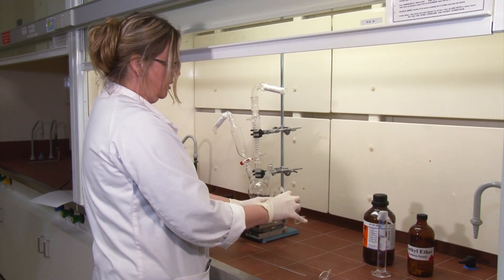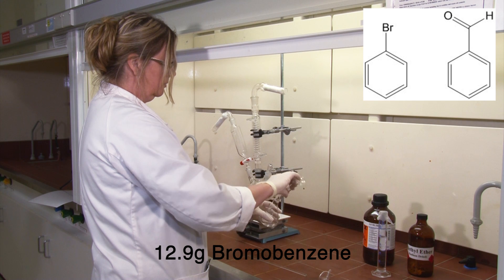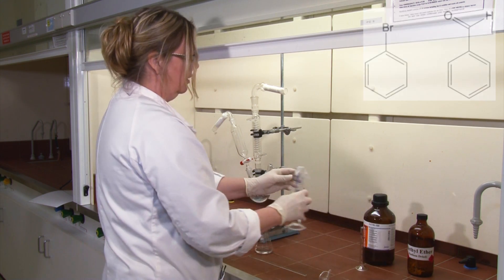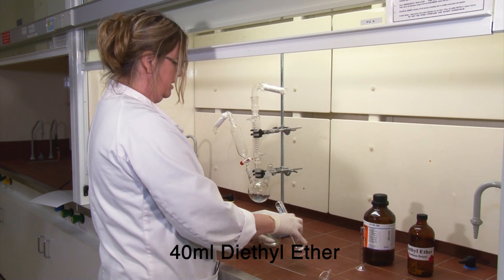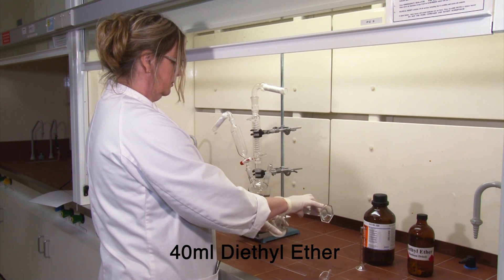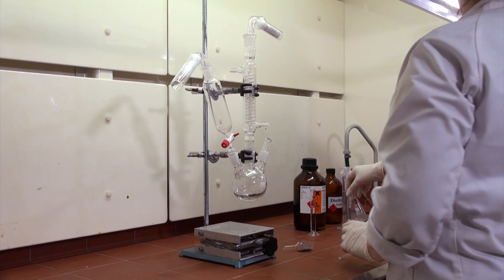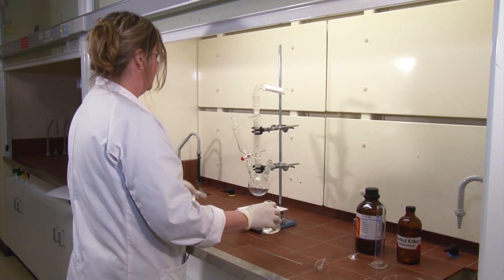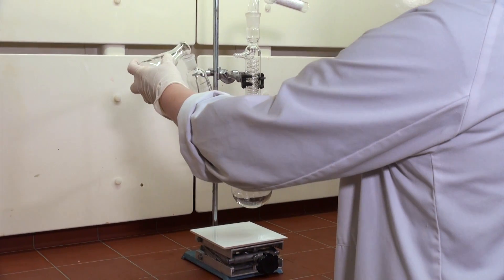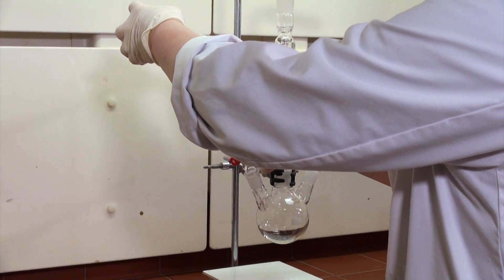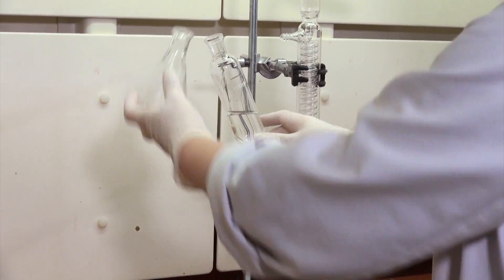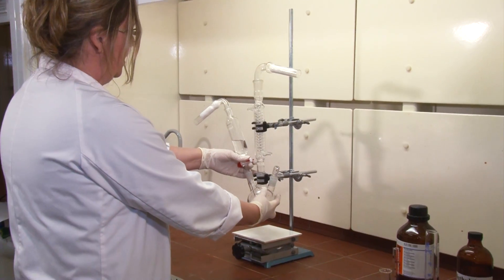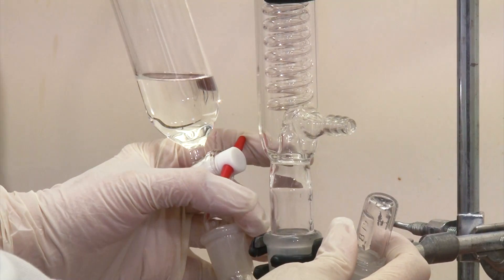Mix together some bromobenzene with 40 ml of sodium dried ether. Make sure that the separating funnel is closed, and pour the reagents in through the top. Add about 10 ml of the reagents to the bottom of the flask.